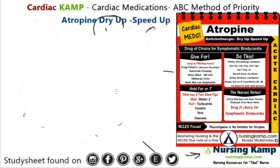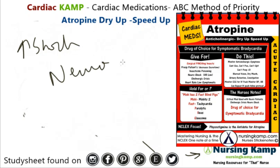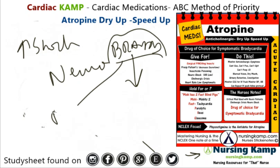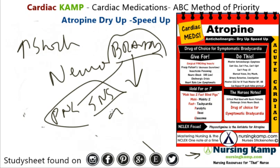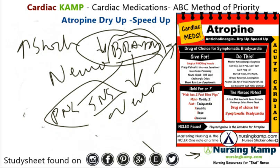Another reason atropine is given is neurogenic shock. Neurogenic shock is different from regular shock, where the heart rate generally goes up. In neurogenic shock, everything is opposite — the patient becomes bradycardic because of the PNS/SNS nervous system imbalance. This is covered more in the neurogenic shock lecture, but basically the bradycardia requires treatment, and the treatment of choice is atropine.